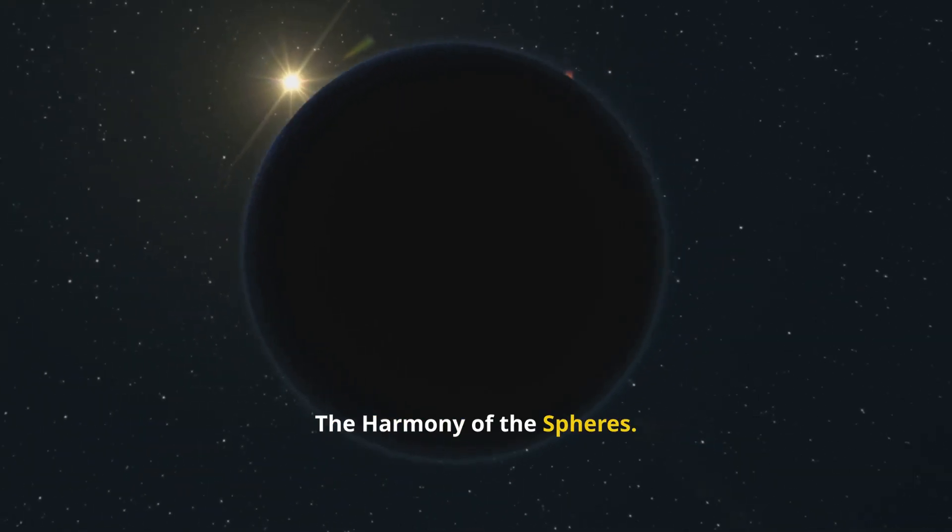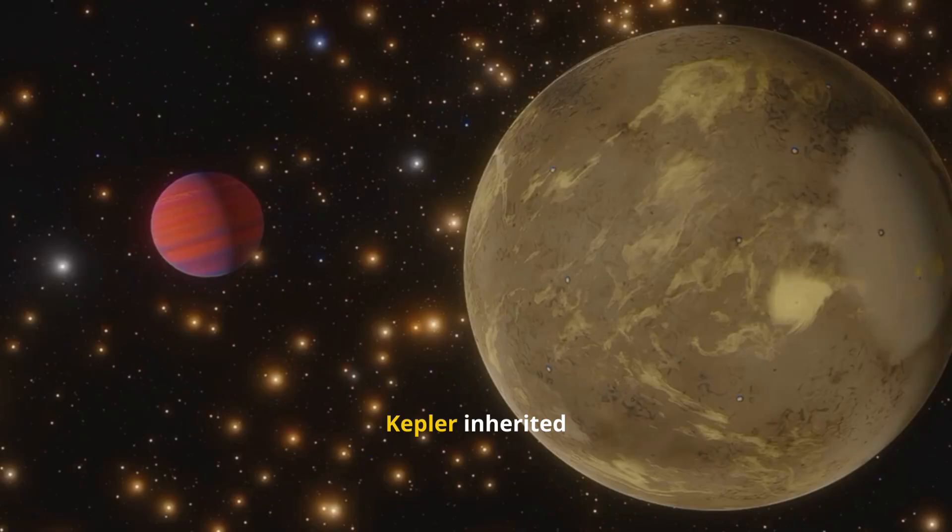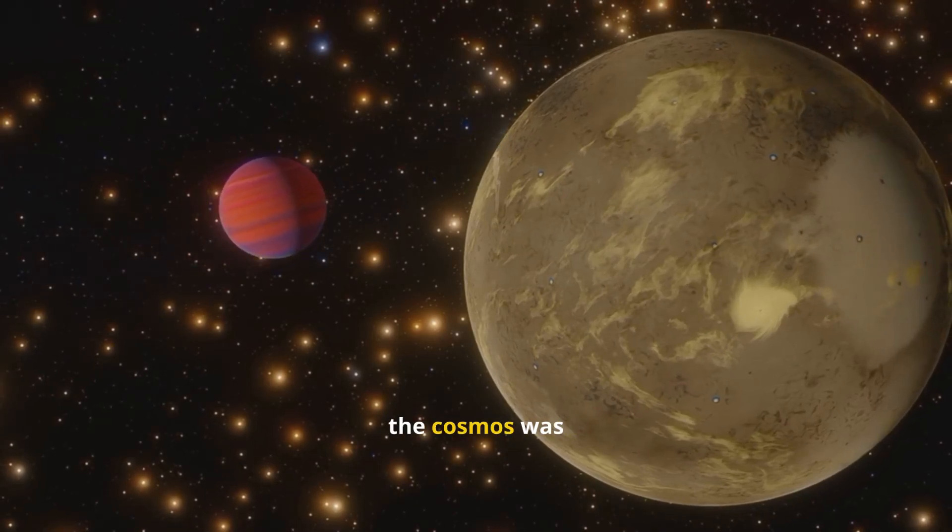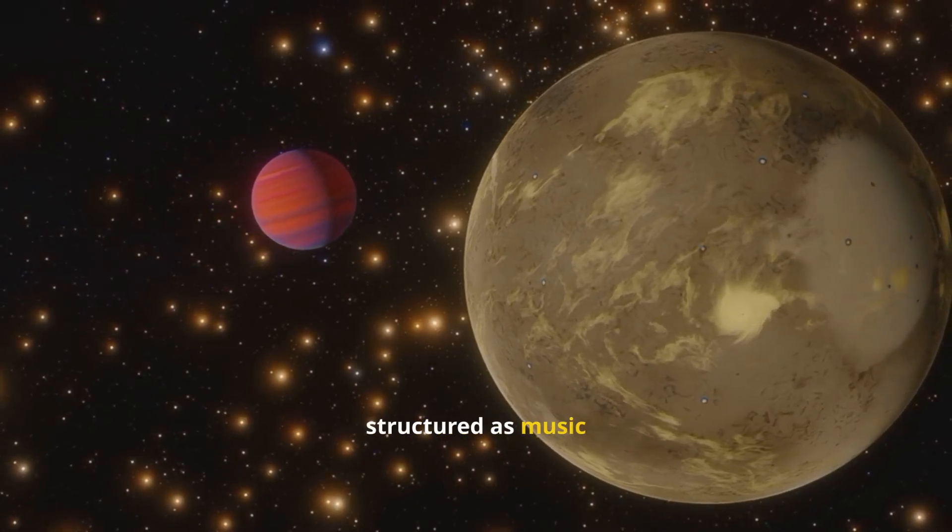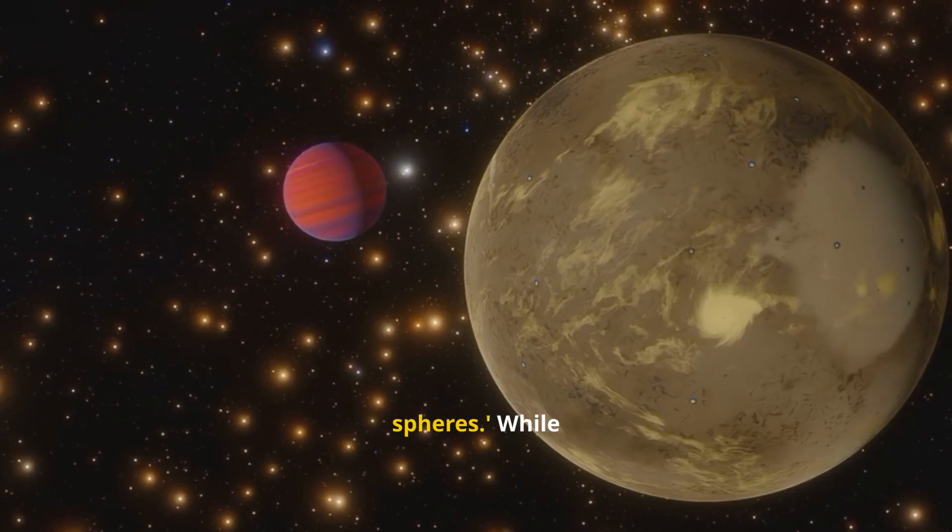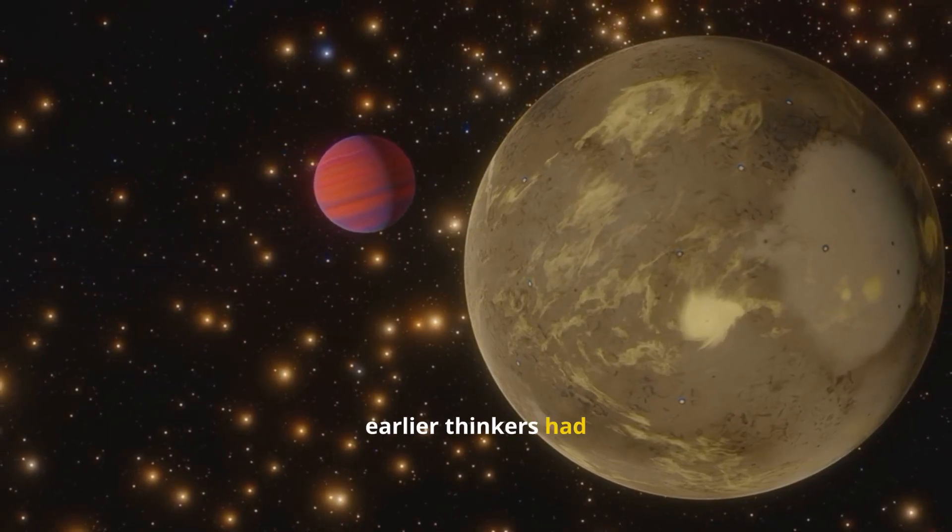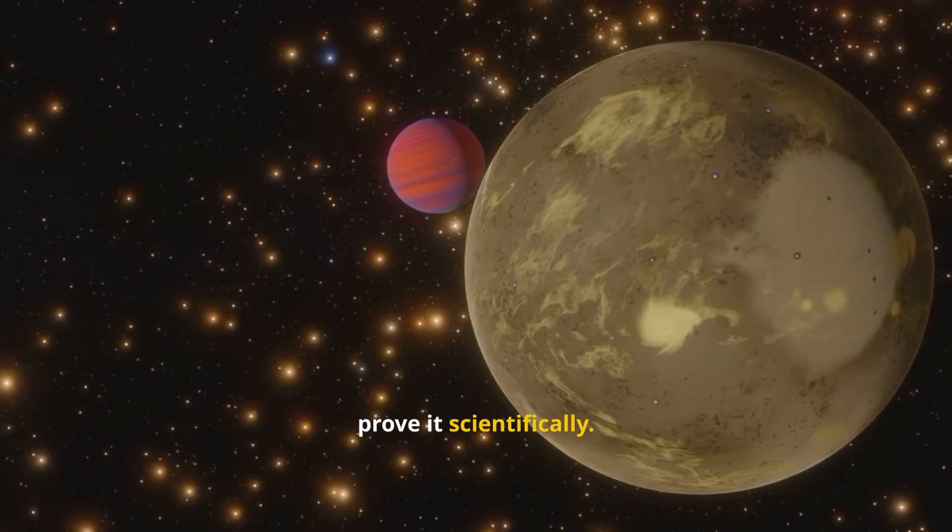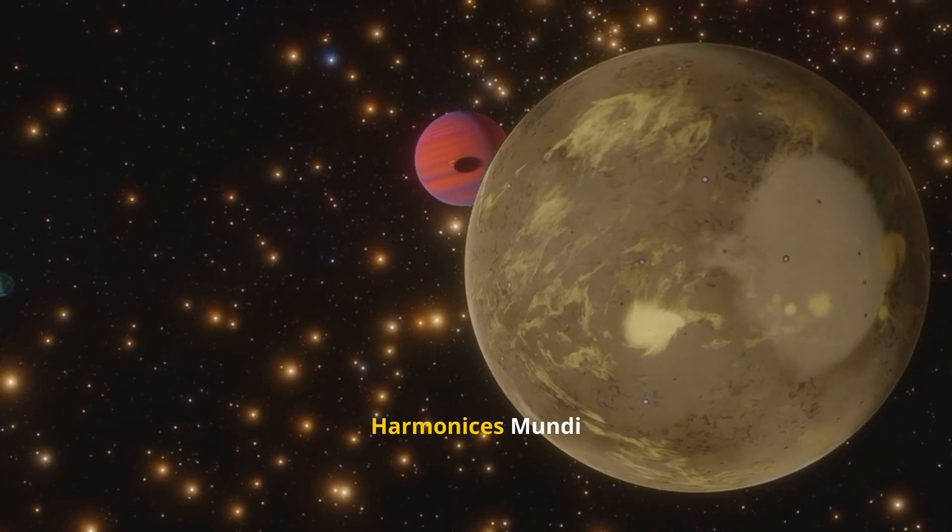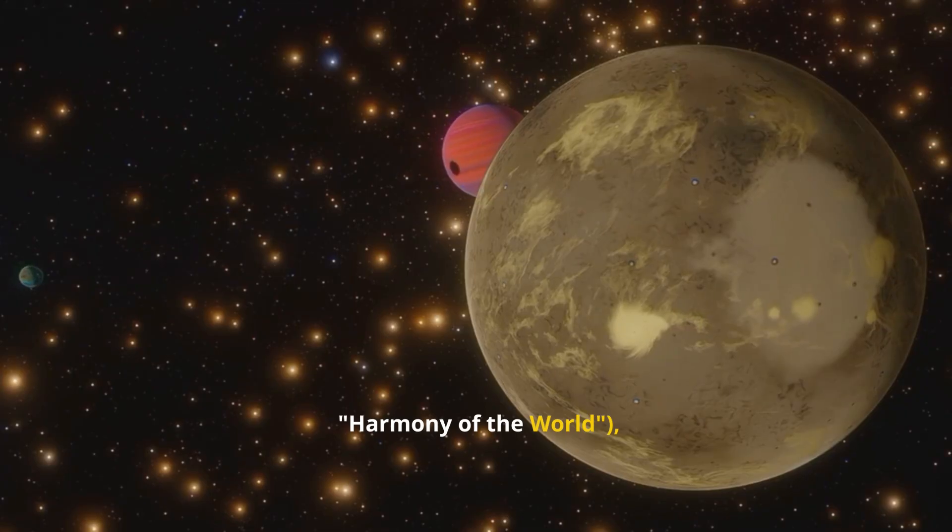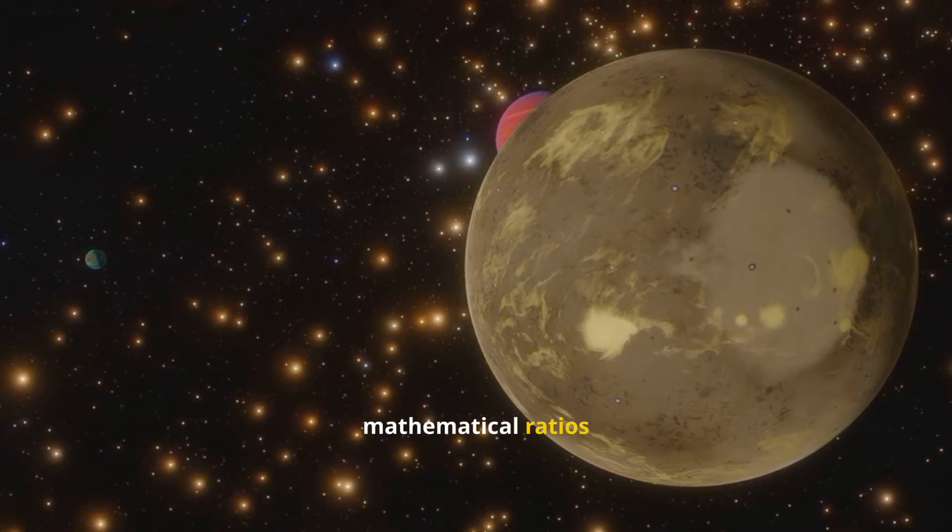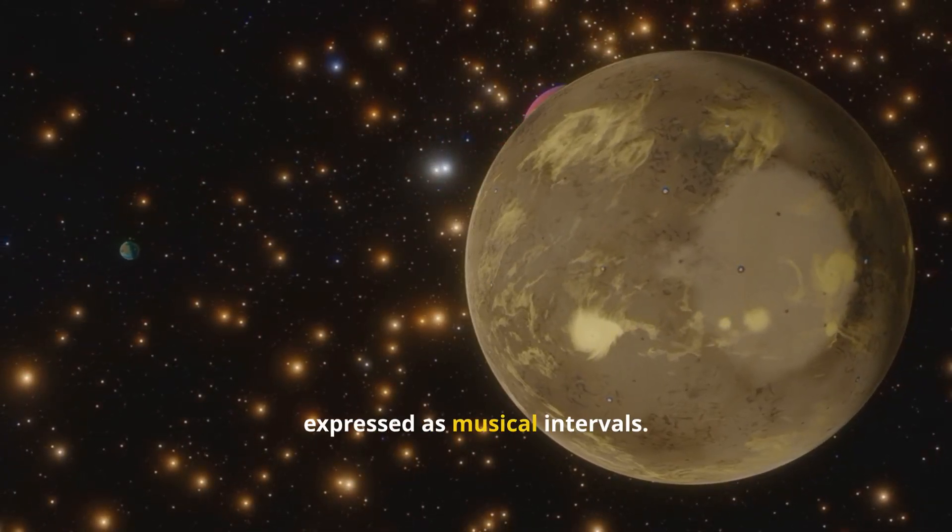The Harmony of the Spheres. Kepler inherited from the Pythagoreans and Plato the idea that the cosmos was structured as music, a harmony of the spheres. While earlier thinkers had treated this notion metaphorically, Kepler sought to prove it scientifically. In his work, Harmonesis Mundi, Harmony of the World, he described how planetary motions followed mathematical ratios that could be expressed as musical intervals.